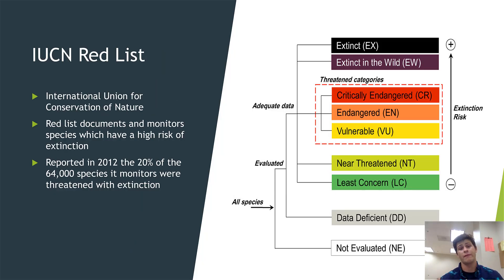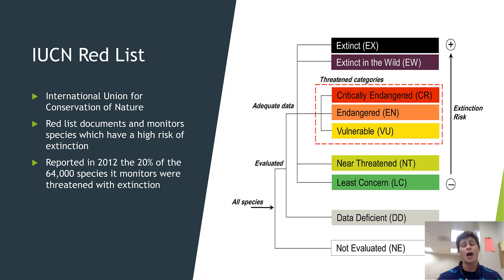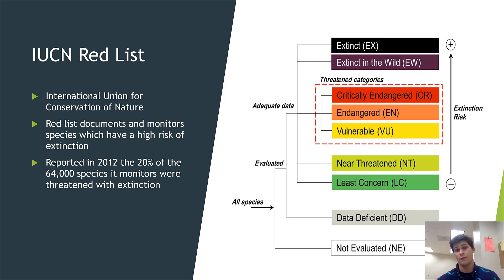This isn't so black and white — there's actually quite a wide range of distinctions given to a species based on how large its numbers are in the wild. This is carefully monitored by something called the IUCN Red List. IUCN stands for the International Union for the Conservation of Nature. This is a red list that documents and monitors species which have a very high risk of extinction. The IUCN Red List rates a species based on its population from least concerned all the way up to extinct in the wild and extinct. You don't necessarily need to know every explicit definition for each category, but you should keep in mind which ones are worse than others — keep the order in mind in terms of severity.